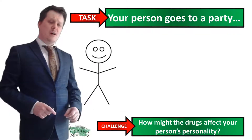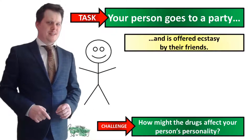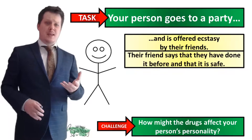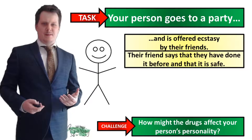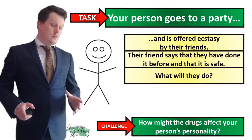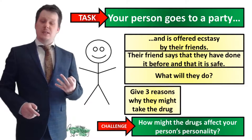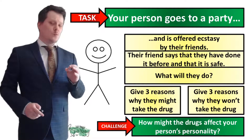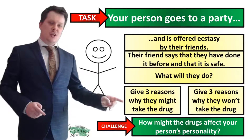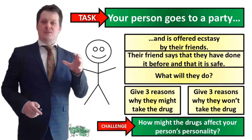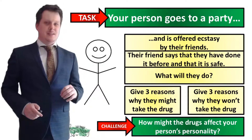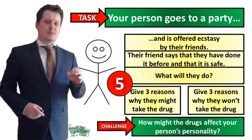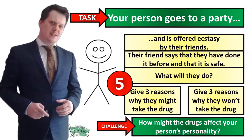Our next task looks at what happens when your person goes to a party and is offered ecstasy by their friends. Their friends say they've done it before and that it's safe. What will your person do? Give three reasons why your person would take the drugs and three reasons why they wouldn't. For a challenge, describe how the drugs might affect your person's personality. Five seconds on the clock — pause if you need more time.